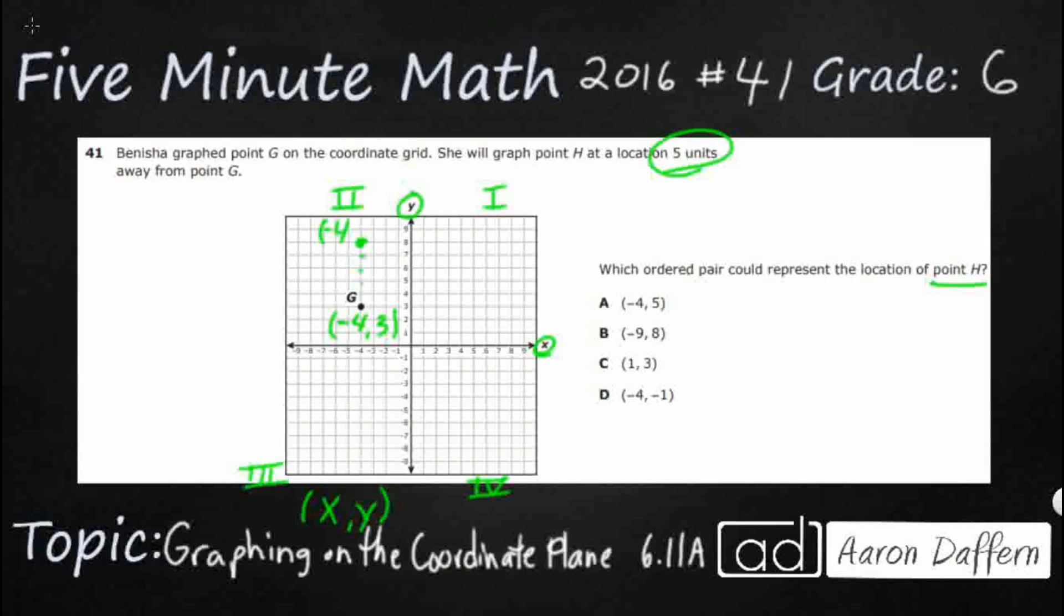So we went up from 3 to 8, which makes sense, right? We're just going to change our Y coordinate up 5. So negative 4, 8. I do not see that on our answer choices, so that's not going to be it.